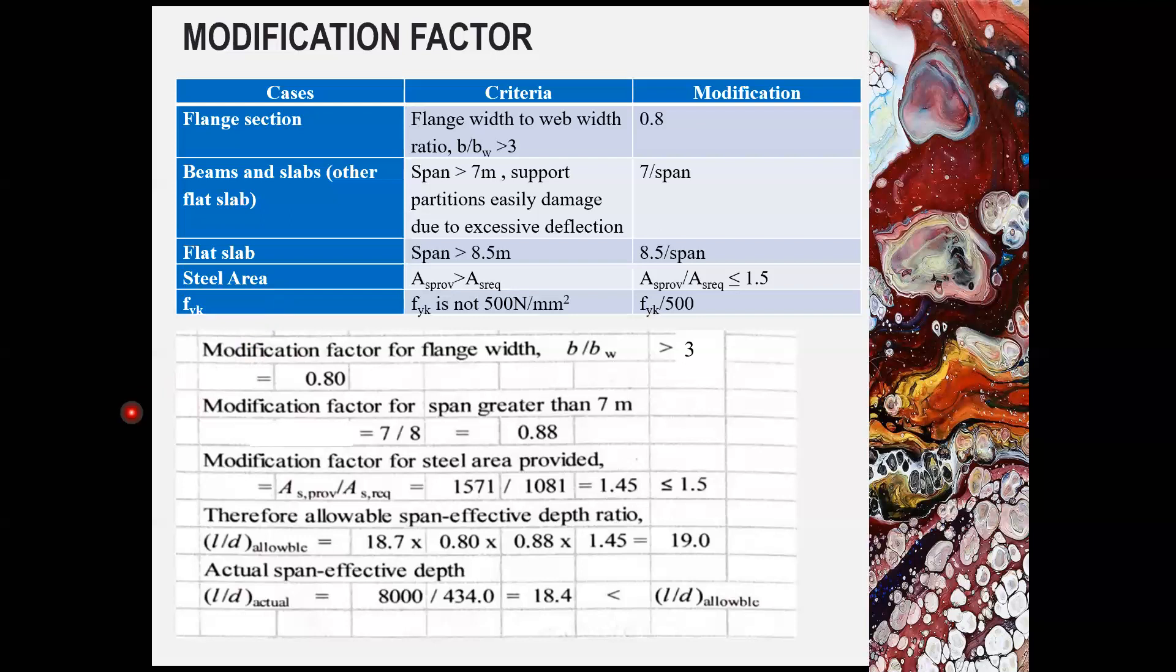And the AS provided is greater than AS required. Therefore modification AS provided divided by AS required should be used when it is equal to 1.45. 1.45 shall be used. And the FYK in this case is 500 newton per mm squared. Therefore no modification factor or modification factor equal to 1 shall be used.